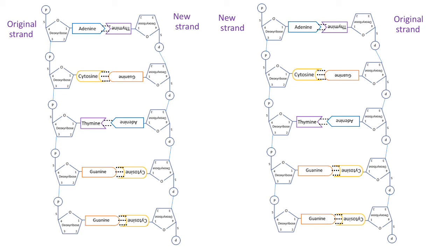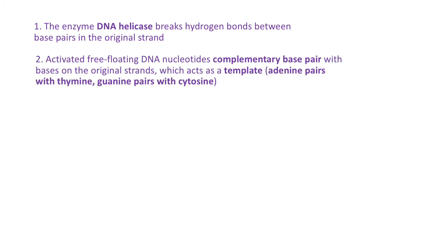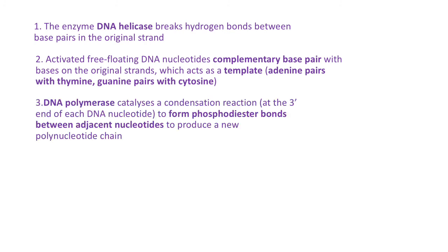The enzyme was DNA helicase breaking the hydrogen bonds. Complementary base pairing occurred between free-floating DNA nucleotides. The enzyme was DNA polymerase that catalyzed the formation of those phosphodiester bonds between adjacent nucleotides.